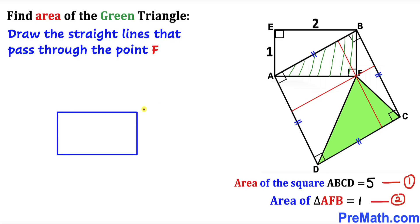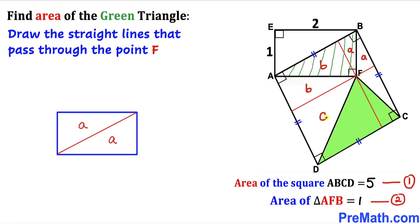Here's a basic concept: if we have a rectangle and draw its diagonal, that diagonal cuts the area into two equal halves. So if one half has area A, the other half also has area A. Applying this to our four rectangles: the two triangles in the first rectangle each have area A, those in the second each have area B, those in the third each have area C, and those in the fourth each have area D.